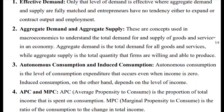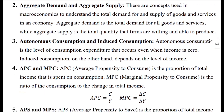Aggregate demand and aggregate supply are concepts used in macroeconomics to understand total demand for and supply of goods and services in an economy. Aggregate demand is the total demand for all goods and services. Aggregate supply is the total quantity that firms are willing and able to produce.